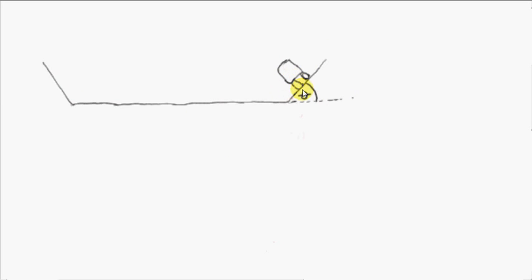Let's indicate the forces on the car. Now we have its weight — the mass is m, so the weight is mg. I'm going to put the tail of the weight vector here just to make the picture easier to read. Now the ground is pressing on the car, so there's a contact force between the ground and the car in a direction perpendicular to the surface of contact. I'll call this force N.